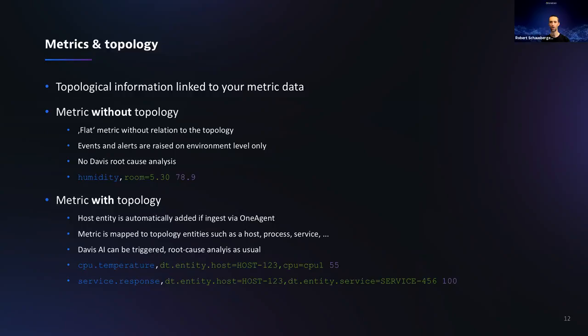This is very handy when using Telegraf — you just push metrics and automatically, if they come via the OneAgent, they are already automatically related to the host entity where the OneAgent is installed, just like every other OneAgent metric. When this is done, Davis AI is triggered in the background, root cause analysis can be performed, and a baseline alert is then related to that topology. You can use drill-down capabilities because all this information is available.